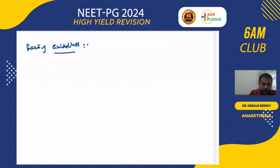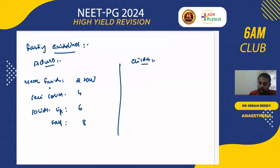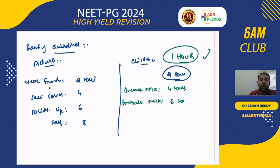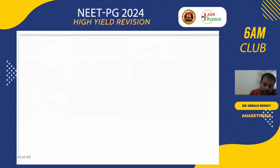Fasting guidelines in adults: clear fluids — 2 hours; semi-solids — 4 hours; light solid meal — 6 hours; fatty meal — 8 hours. In children: clear fluids — 2 hours (1 hour per recent guidelines if that option is given); breast milk — 4 hours; formula milk — 6 hours.